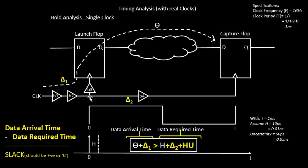Here is the circuitry: the launch clock network delay, the capture clock network delay, and the combinational delay. The defining equation for hold time is: θ1 + δ1 should be greater than H + δ2 plus the hold uncertainty.